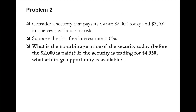Now let's move on to Problem 2, which we didn't have time to cover in the lecture. This is a slightly more complicated scenario than the previous example because there are two cash flows. Consider a security that pays its owner $2,000 today and $3,000 in one year without any risk. The risk-free interest rate is 6%. Whether I say 'interest rate' or 'risk-free interest rate,' since there's no risk here, it just means the discount rate R. What is the no-arbitrage price of the security today, before the $2,000 is paid?